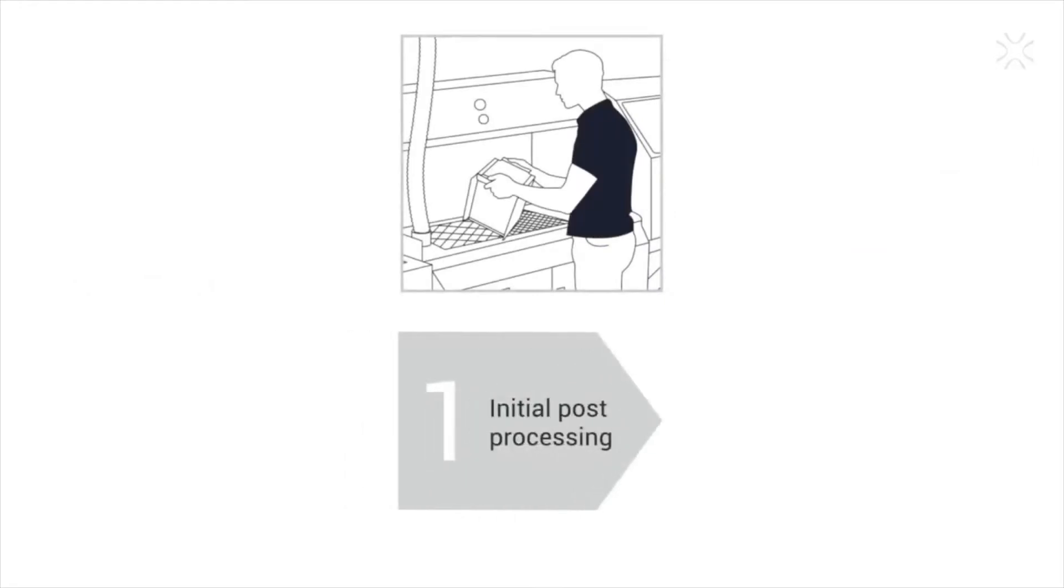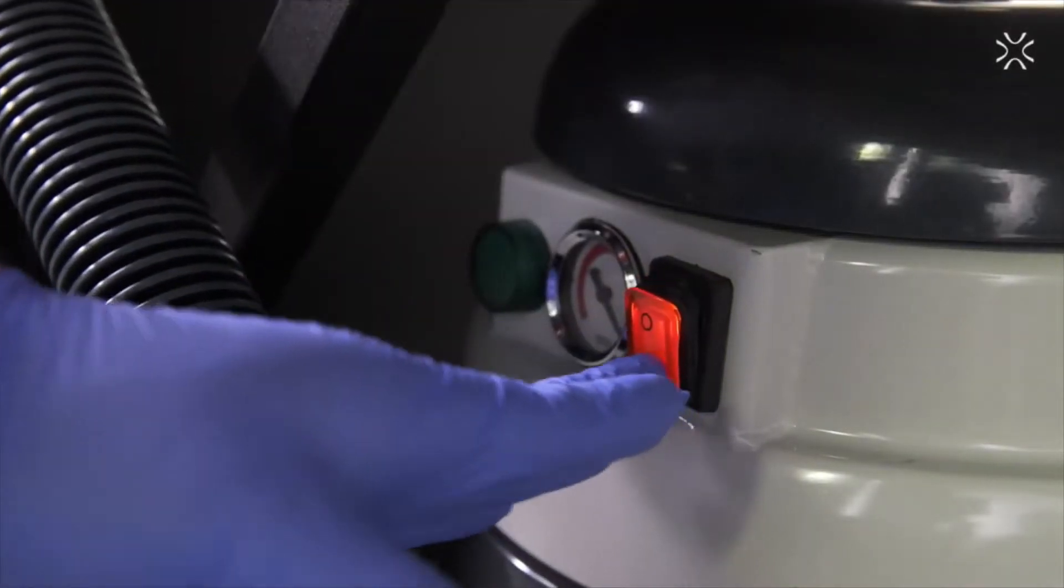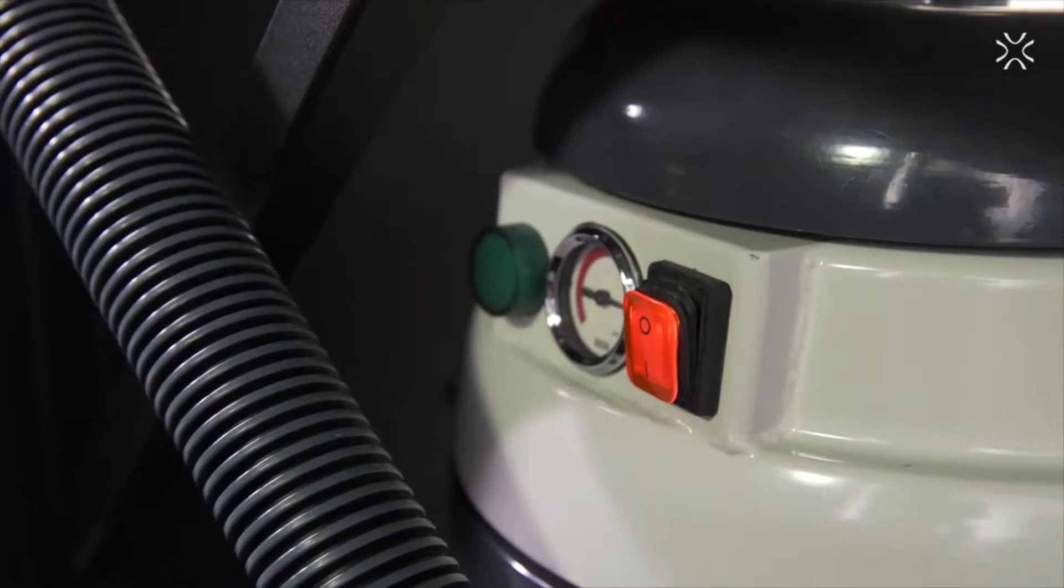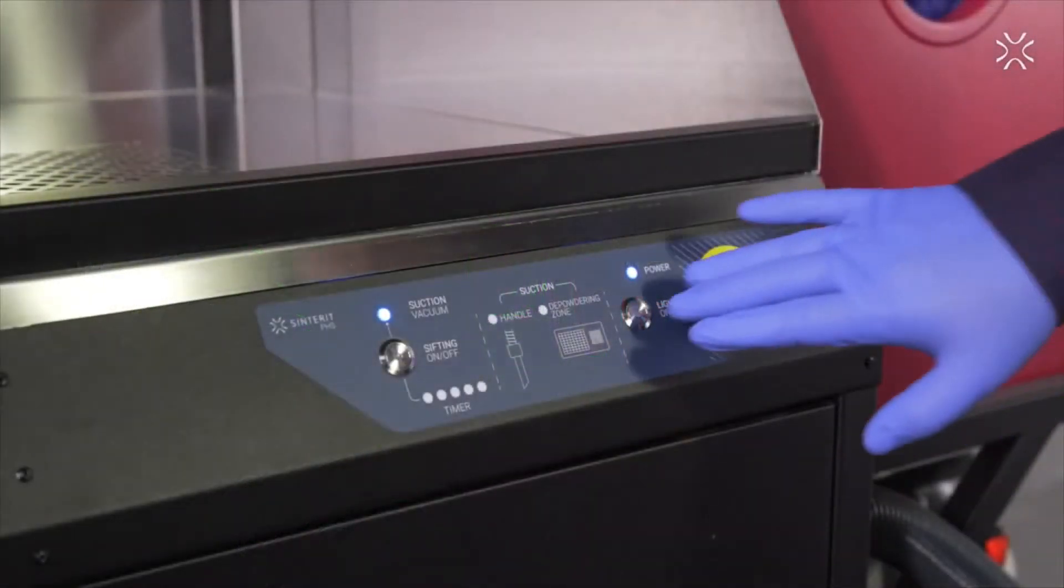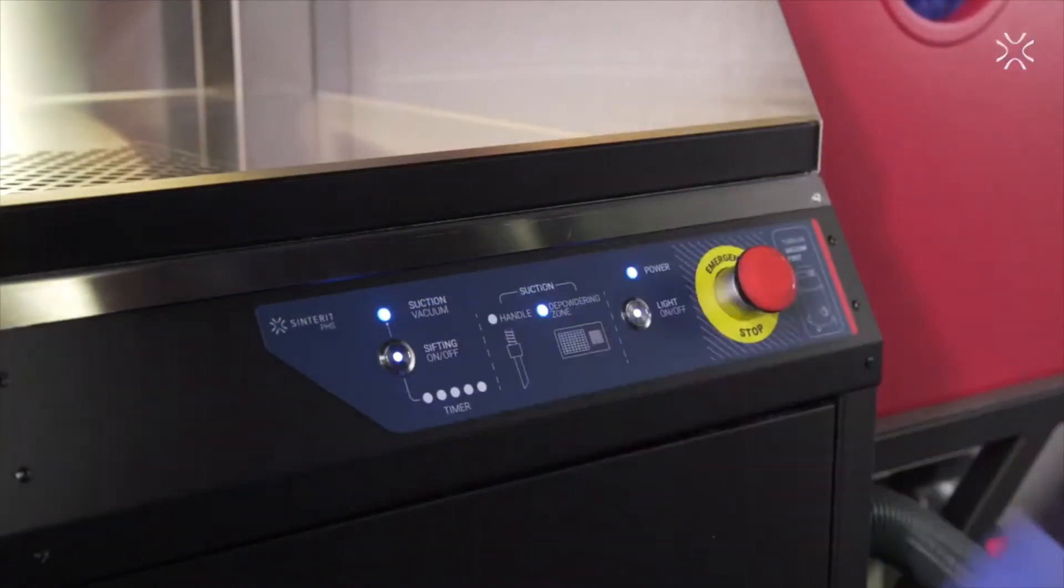How do you turn the PHS on? Simply turn on the Atex vacuum cleaner, then from the control panel turn on the lights and start the machine.